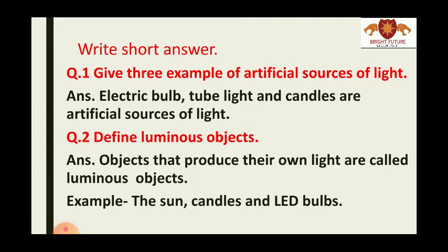Question number two: Define luminous objects. Answer is: objects that produce their own light are called luminous objects. Such objects jo apni swayam ki light produce karte hain, unhe luminous objects kehte hain. Examples: the sun, candles, and LED bulbs — these all produce their own light.